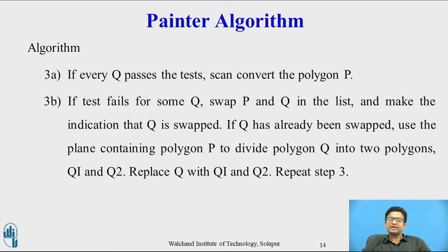If Q has already been entirely swapped, use the plane containing polygon P to divide polygon Q into two polygons — Q1 and Q2 — and replace Q with Q1 and Q2. Then repeat step 3, checking tests 2 to 6 for polygon Q again.